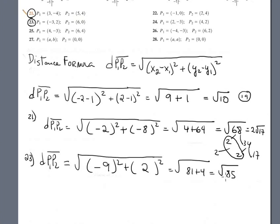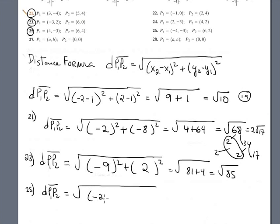Problem 25: distance P1P2 equals square root. The first component is 4 minus 6, which is negative 2, and negative 2 squared. It doesn't matter if you subtract 4 minus 6 or 6 minus 4 — when you square, everything is positive. Plus negative 3 minus 4 is negative 7, squared. Square root of 4 plus 49 equals square root of 53.